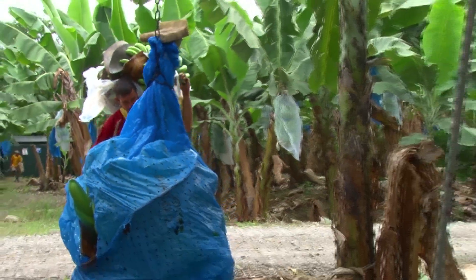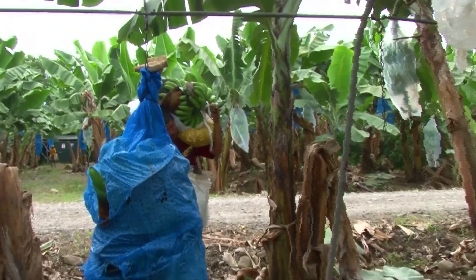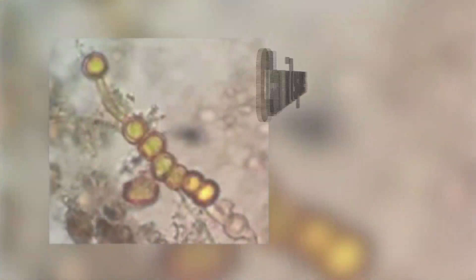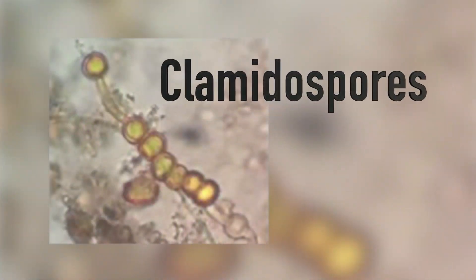Fusarium oxysporum special form cubense is a soil-borne pathogen which can survive for up to 30 years. How does it manage to survive so long in the ground? It produces resistance structures known as chlamydospores. These structures are capable of persisting for a long time in the soil, even in the absence of a crop.